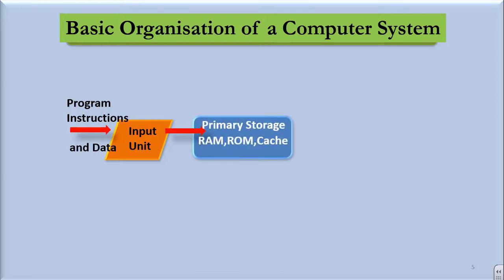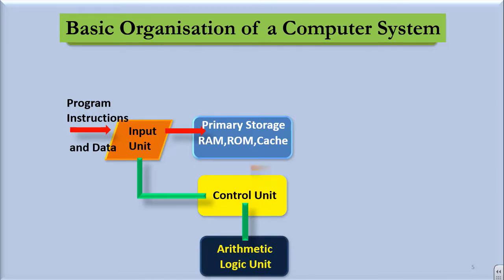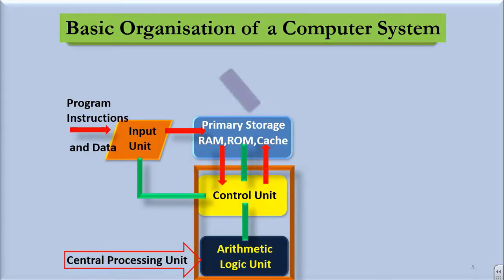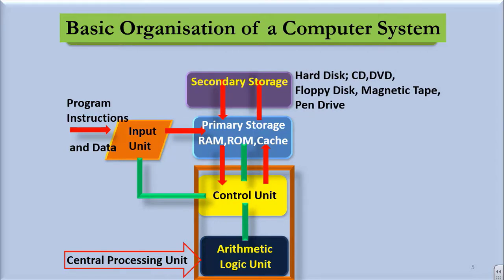Primary Storage, which consists of RAM, ROM, Cache and there is one more memory that is Register. This is CPU, which consists of Control Unit and Arithmetic Logic Unit. Then we have Secondary Storage, which is nothing but hard disk, CDs, DVDs, pen drives, floppy disks, magnetic tapes, etc.